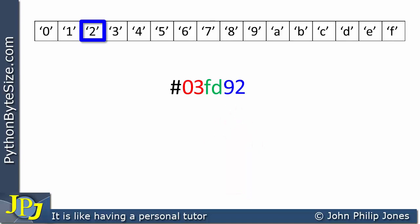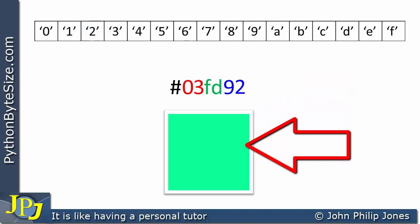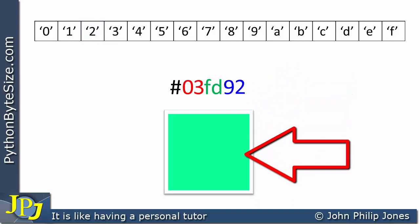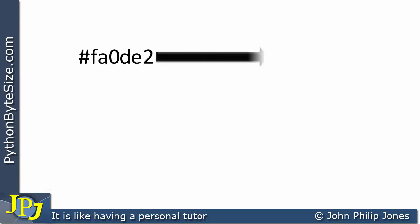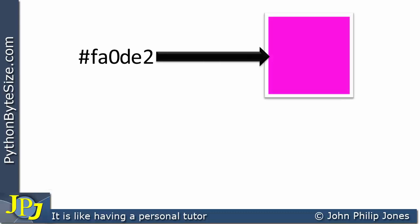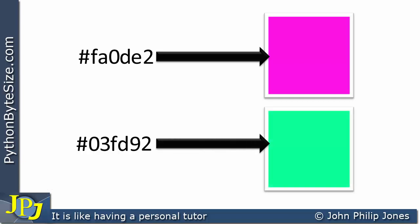What we have is a color code selected randomly, with the red, green, and blue components reflected by the colors of the figures. So 03 is the red component, FD is the green component, and 92 is the blue component. This color code is going to give us a specific color. So we've generated the first code randomly, which gave us one color, and we've generated the second code randomly, which gave us this different color.